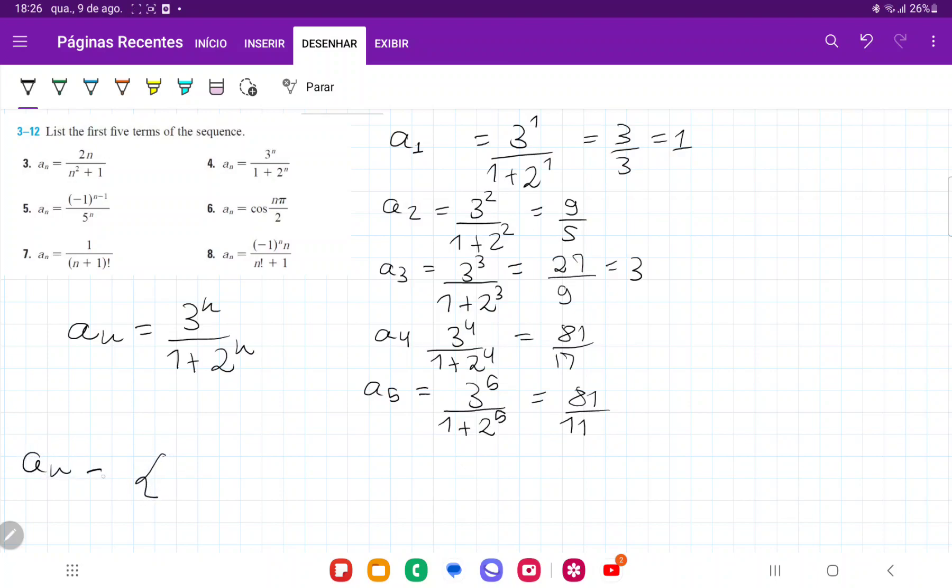When we put all these together, aₙ for the first five terms is 1, 9/5, 3, 81/17, and 81/11. That's it for the first five terms.